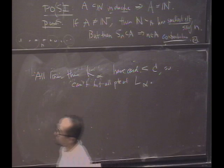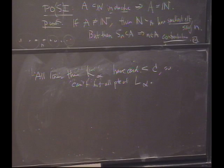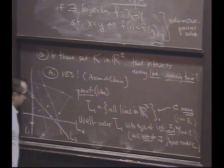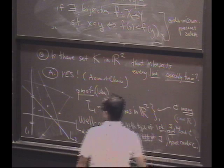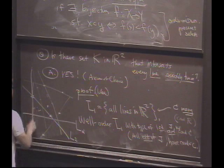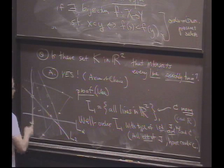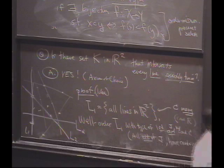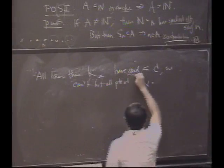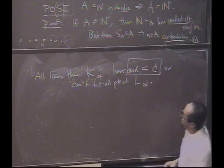In other words, if you do this for all the lines through the previous points that existed, you want to know in my new line, L_alpha, that there are still some points left to choose. Well, you look at the existing set. They don't hit every line on this point because their cardinality was too small. That's where we use the fact that the cardinality is less than C.